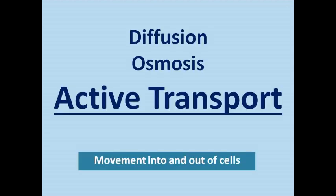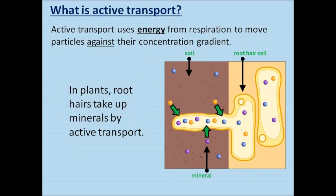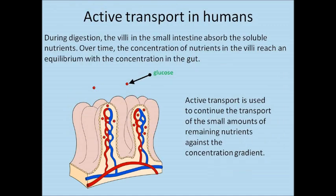Active transport uses energy from respiration to move particles against their concentration gradient — from a lower concentration to a higher concentration. In plants, root hairs take up minerals by active transport. A good human example is during digestion: the villi in the small intestine absorb soluble nutrients. Over time the concentration of nutrients in the villi will reach an equilibrium with the concentration in the gut, so active transport is used to continue transporting the remaining nutrients, such as glucose, against their concentration gradient, ensuring we absorb as much as possible into the blood supply.